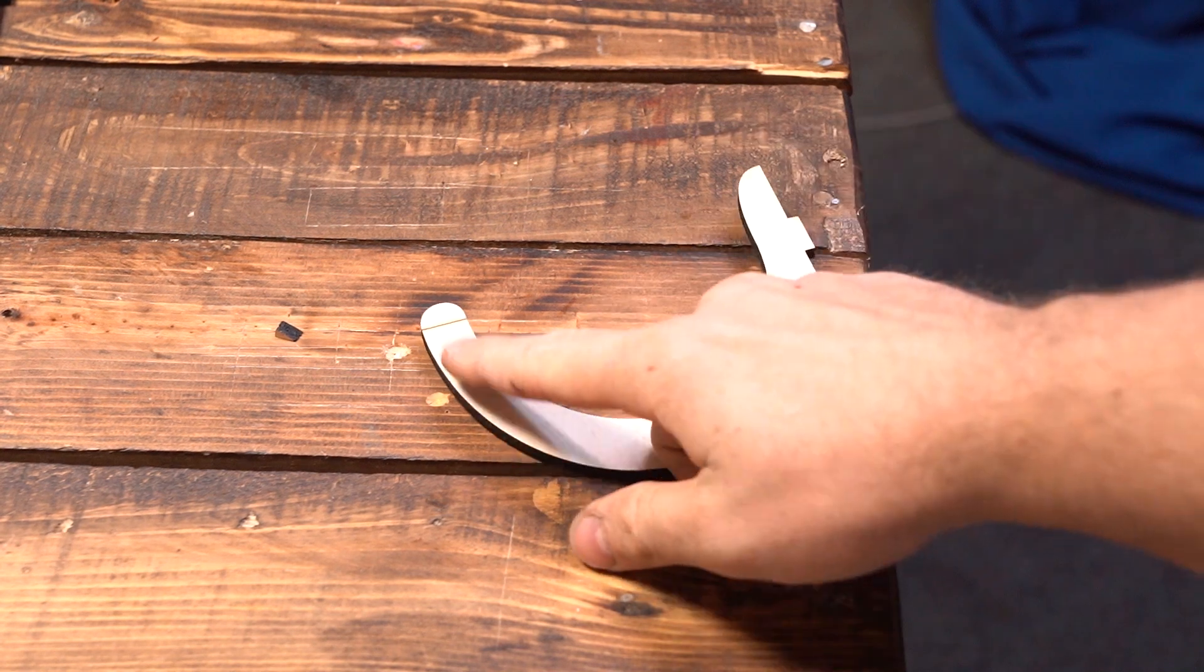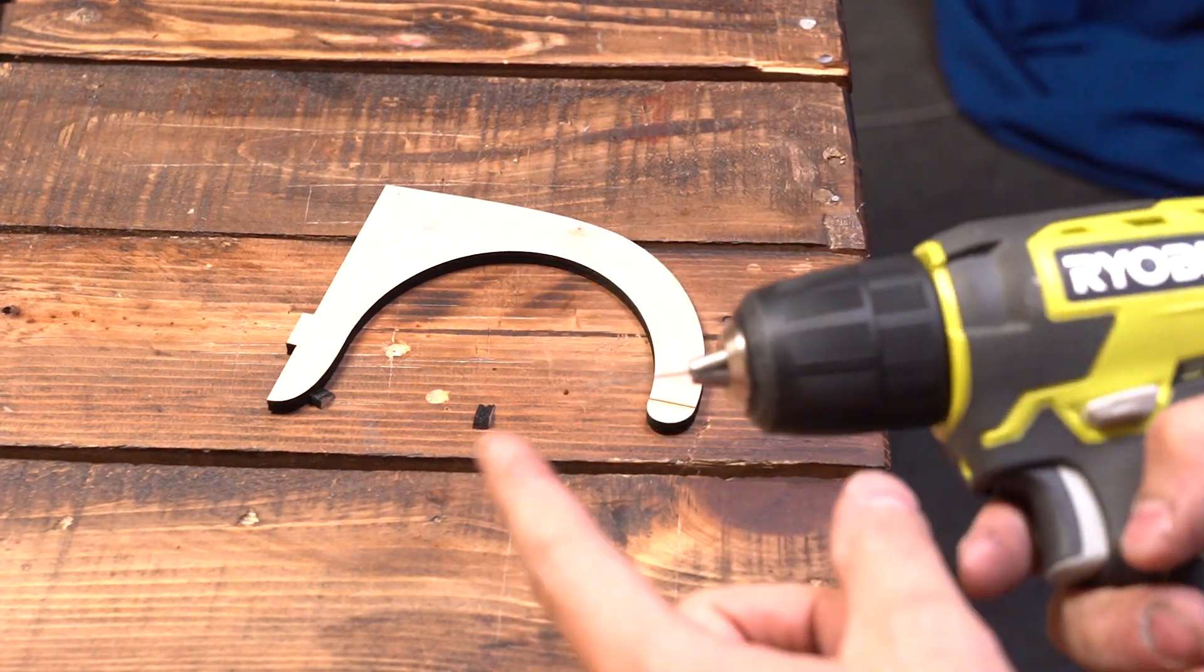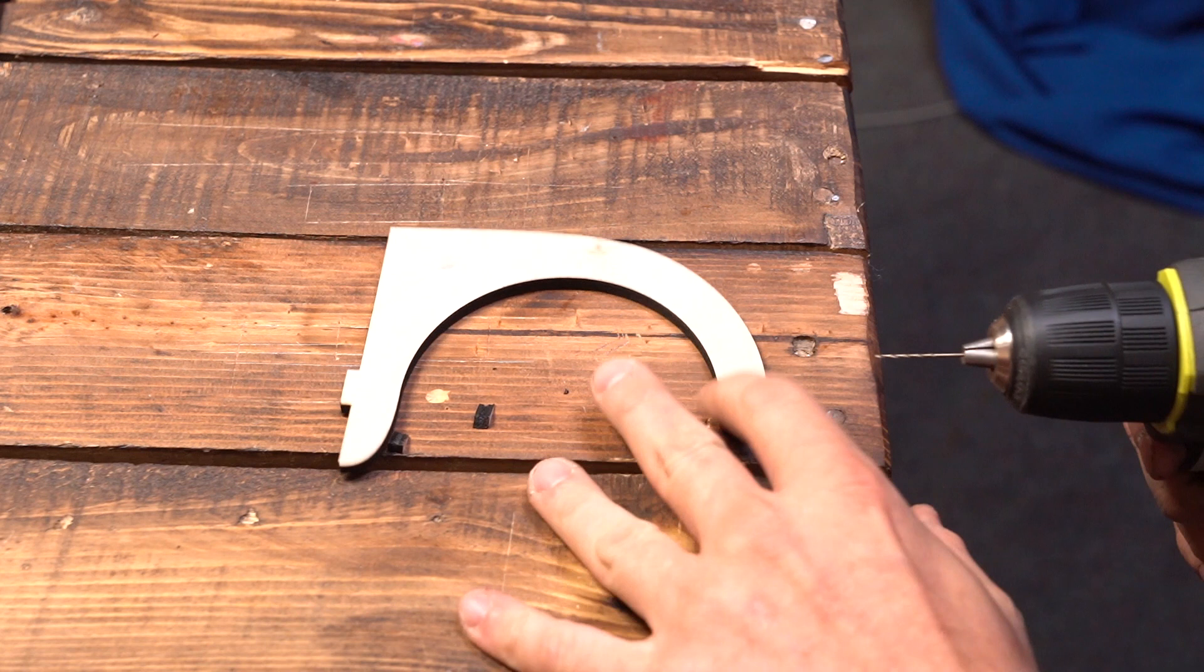Now let's take these pieces with the vector mark and we're going to take a tiny drill bit and drill down the middle following the vector mark.